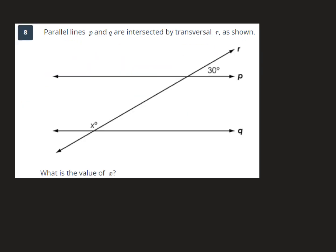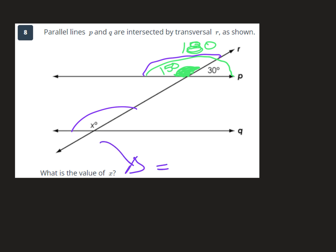Parallel lines P and Q are intersected by a transversal R. What is the value of x? These two angles total 180 degrees, so this angle is 180 minus 30, which is 150. Then we know that this angle and this angle are equal — they are co-interior or corresponding angles. Therefore x equals 150 degrees.